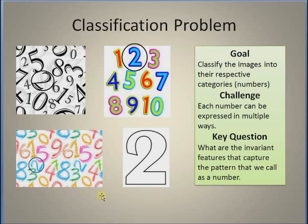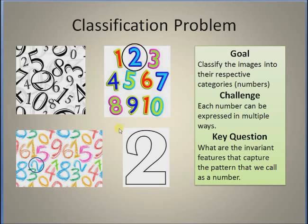Here is an illustration of a simple classification problem. We have a bunch of images, each representing numbers from 0 to 9 in different ways. The goal in a classification problem is to classify these images of numbers into their respective categories — for example, all images of 2, which look different in each image, have to be categorized as the number 2, and similarly for 5, 6, 1, and so on. The challenge is that each number can be expressed in a slightly different pattern.